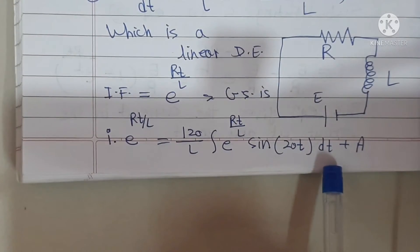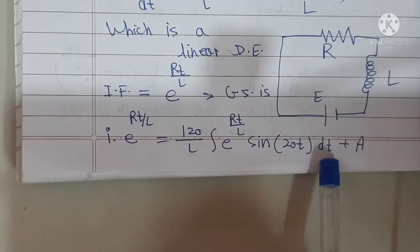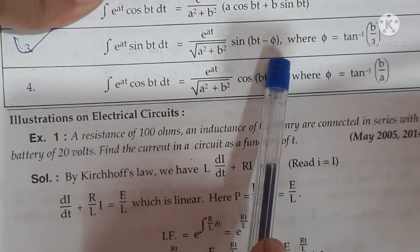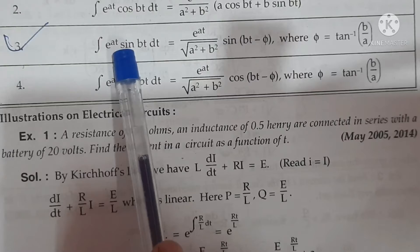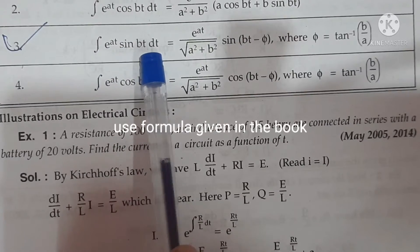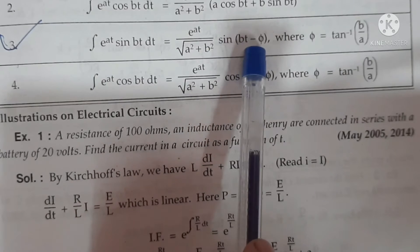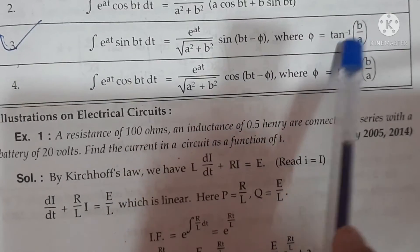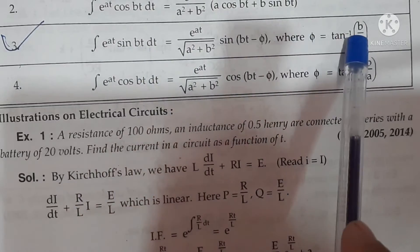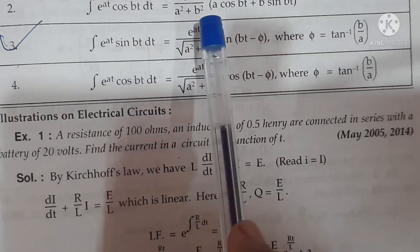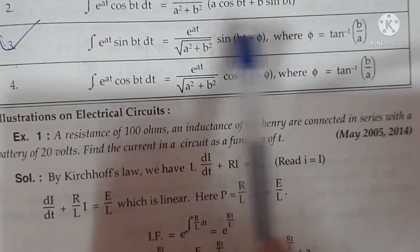For solving this particular type of integration, a formula is given in the publication book, and it is used in most electrical circuit problems. The formula is: ∫e^(AT)·sin(BT) dt equals e^(AT) / √(A²+B²) · sin(BT − φ), where φ equals tan⁻¹(B/A). Note down this formula carefully — it applies when an exponential term is multiplied by a trigonometric term.